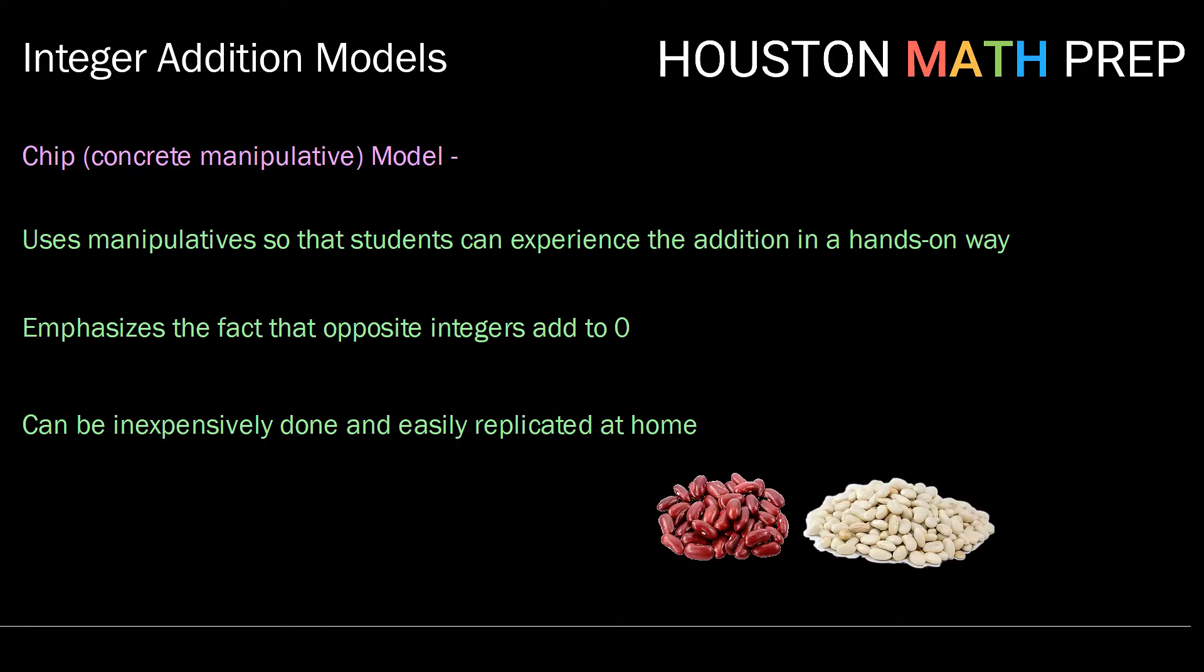One thing that you could use is actually just two different colors of dry beans. You can assign one color to be positive and one color to be negative, and it works exactly the same way.